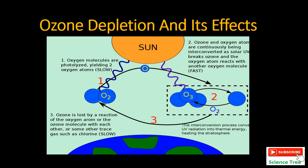This ozone layer protects us from the ultraviolet radiations of the sun, and no doubt these radiations are quite harmful. Ozone is lost by a reaction of the oxygen atom or the ozone molecule with each other or with some trace gas such as chlorine. We release chlorine into the atmosphere by means of chlorofluorocarbons.